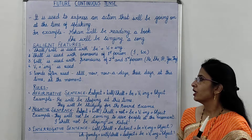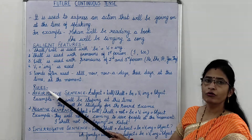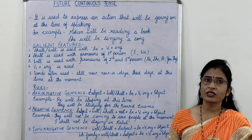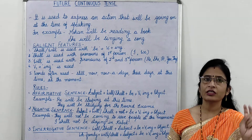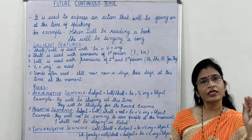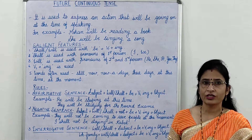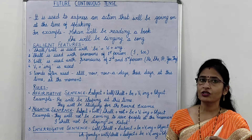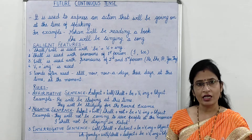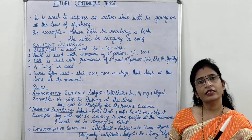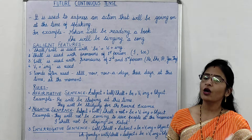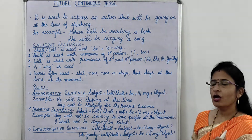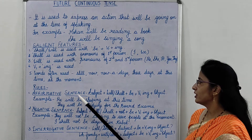Students, now we come on to the rules. As you all know, there are three kinds of sentences: affirmative sentence, negative sentence, and interrogative sentence. Affirmative sentences are positive in nature, negative sentences are negative in nature, and interrogative sentences are questioning sentences. Now, the rule for affirmative sentence.